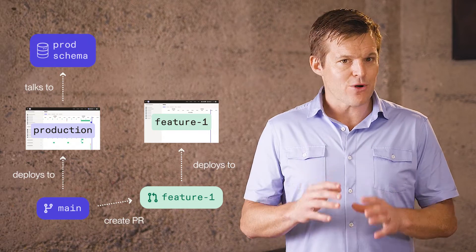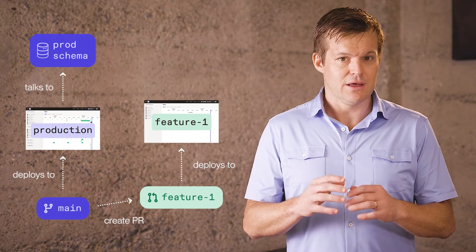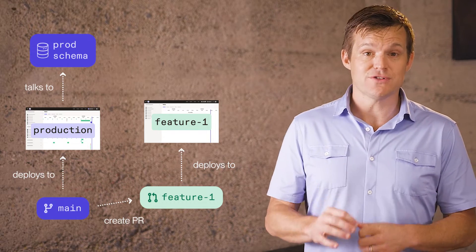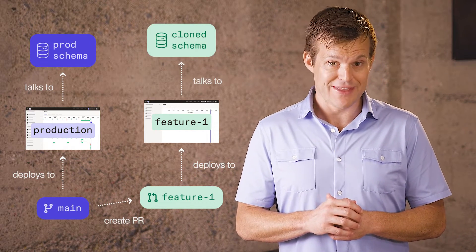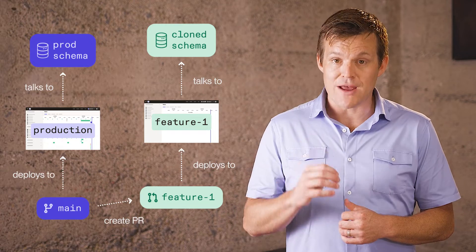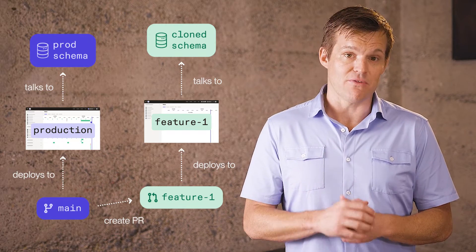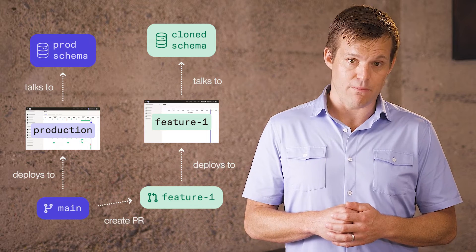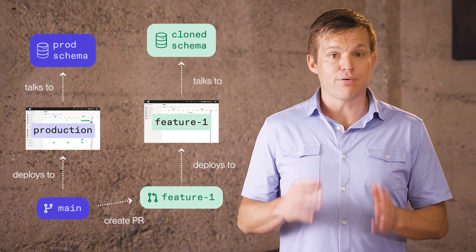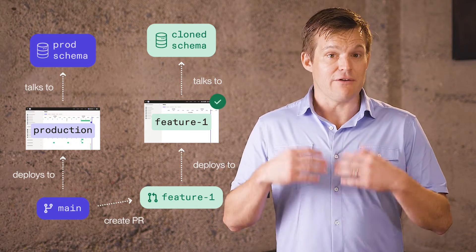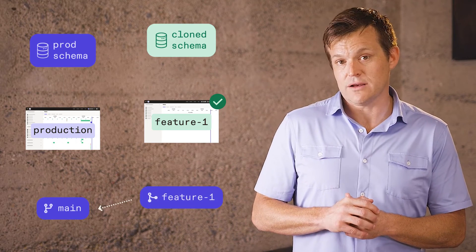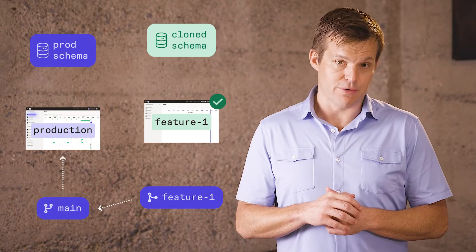The Dagster framework is designed with this in mind and allows you to parameterize your pipelines and assets to point to test data in the branch deployment. In effect, you can branch your entire environment, providing a safe, collaborative engineering workflow on top of your data platform. When you have completed your work in your PR and validated your changes in the branch deployment, you merge your changes back to main, and then new code is deployed into production, and your branch deployment goes dormant.